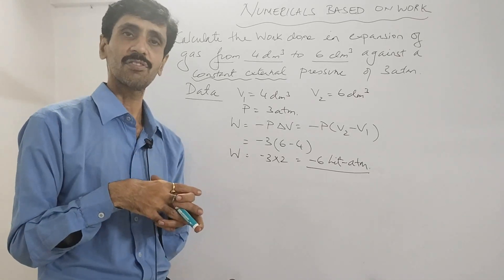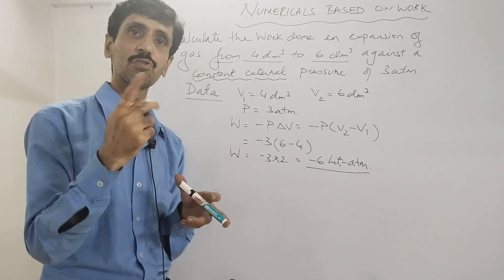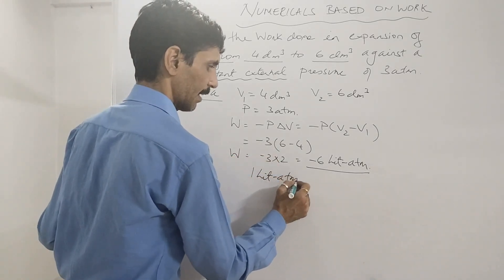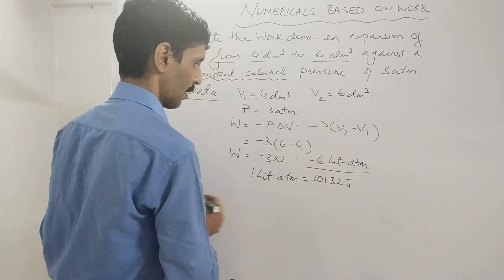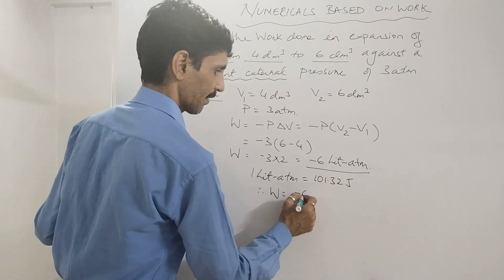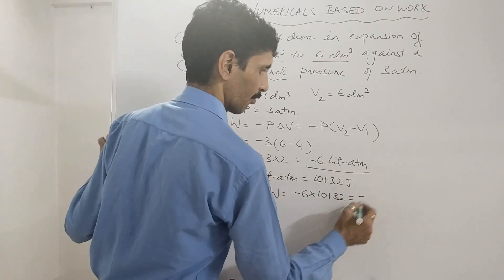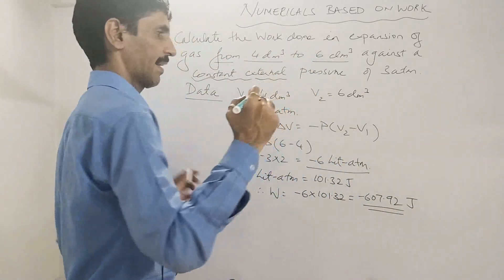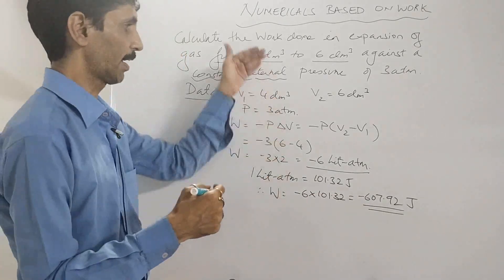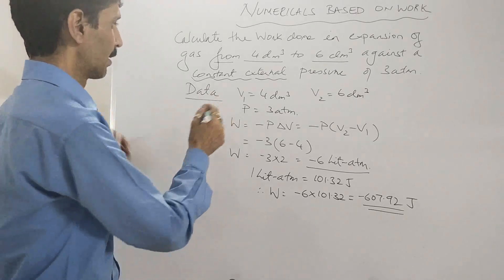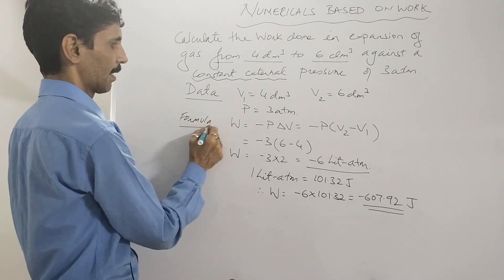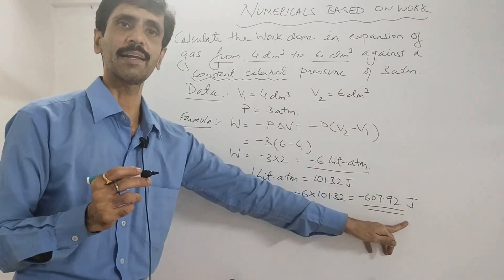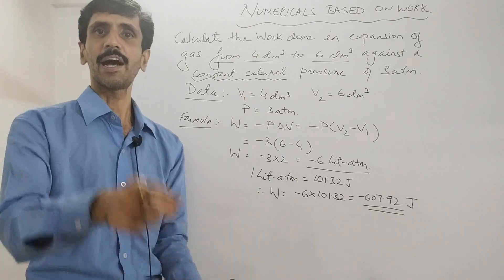Generally the acceptable SI unit for work is joules, so we need to convert liter·atmosphere to joules. The conversion factor is: 1 liter·atmosphere = 101.32 joules. Therefore W = −6 × 101.32 = −607.92 joules. This is your final answer. To summarize: first write data, then the formula W = −PΔV, substitute values, and calculate with final units.